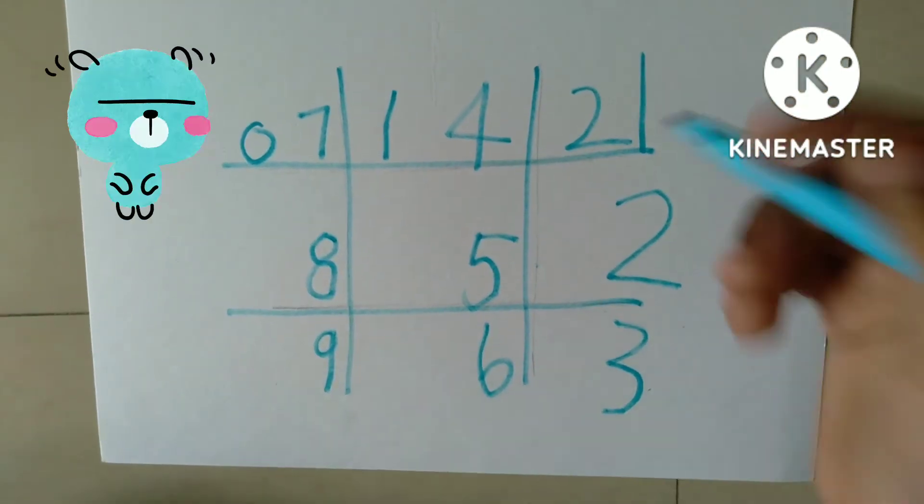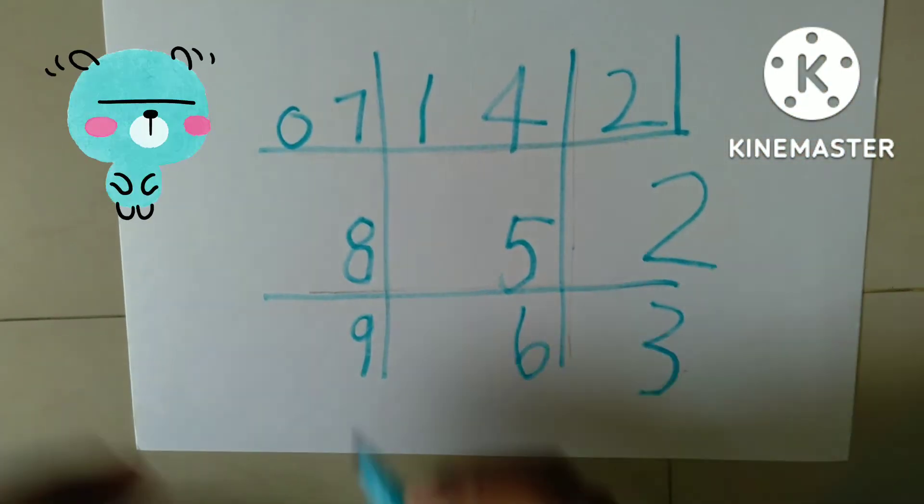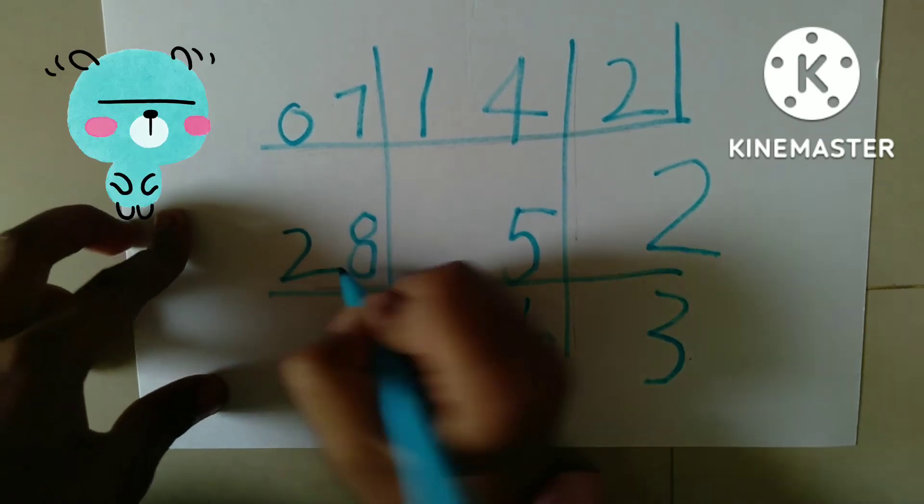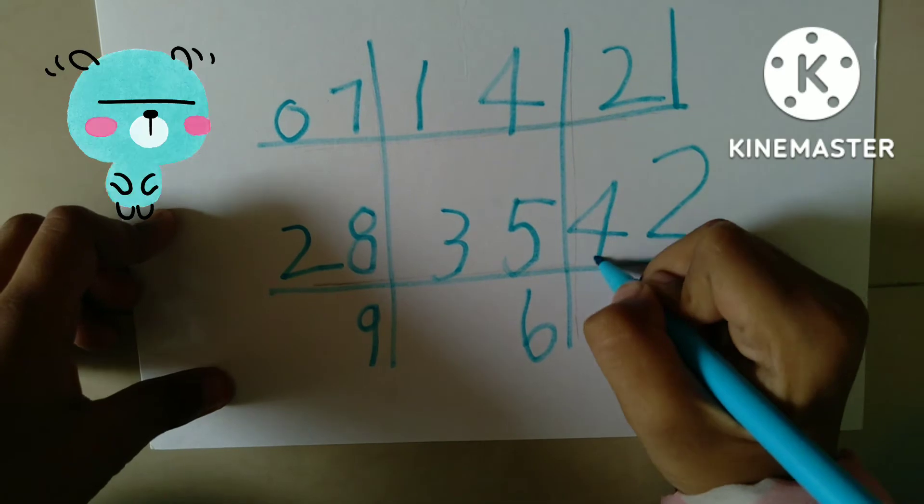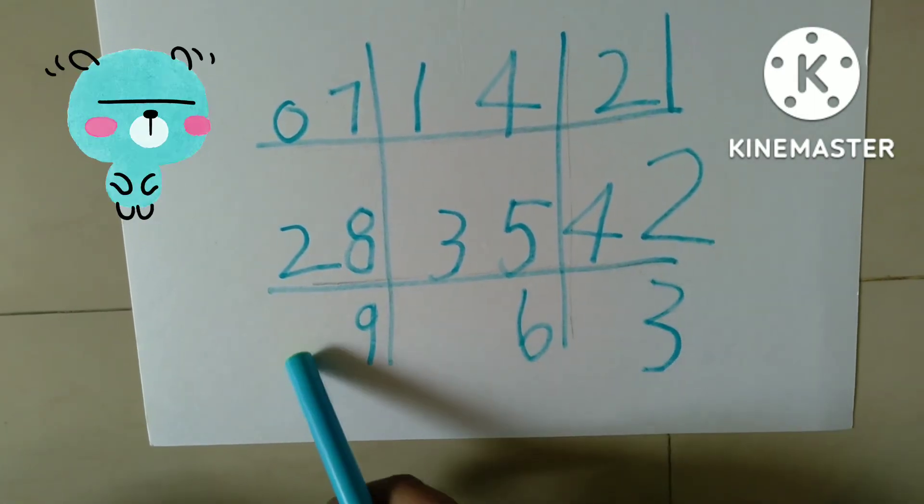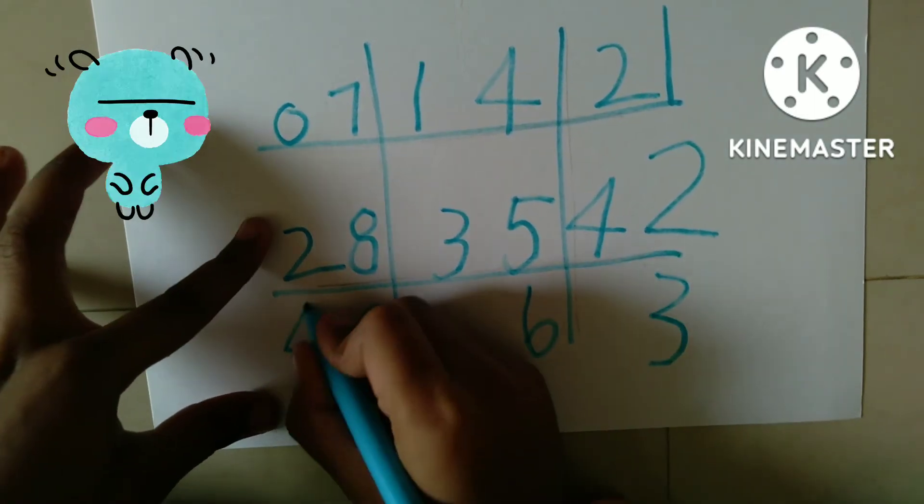Here the number is 2. Same number starts here. 2, 3, 4. Here the number is 4. Same number will start here. 4, 5.